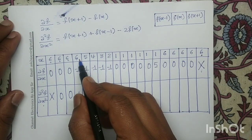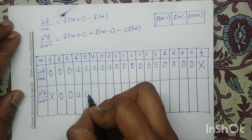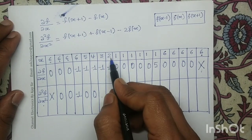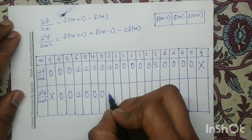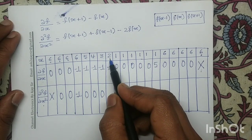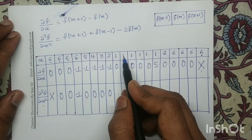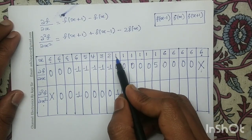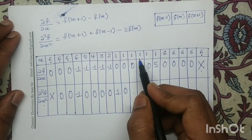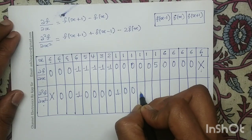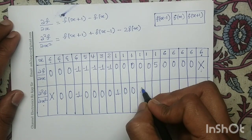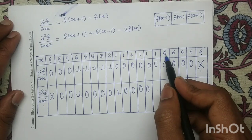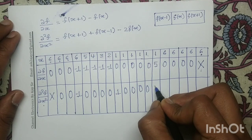Continuing: 4 plus 6 minus 2×5 = 0; 3 plus 5 minus 2×4 = 0; 2 plus 4 minus 2×3 = 0; 1 plus 3 minus 2×2 = 0; 1 plus 2 minus 2×1 = 1. Then 1 plus 1 minus 2×1 = 0 at the next several positions. At this point, 6 plus 1 minus 2×1 = 5.